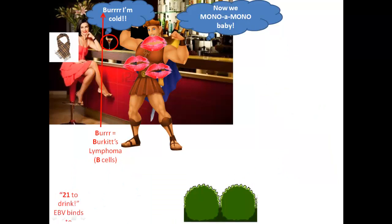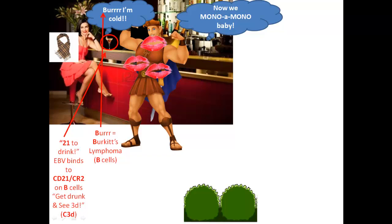Now pay attention to the drink that you see. In order to drink, at least in America, you've got to be 21 years old — think about America, not Canada, because that's 19. So 21 to drink reminds you that the B cell receptor is CD21, also known as CR2, complement receptor number two. Now that's going to bind to C3D. To remember C3D, remember when you get drunk you can take this two-dimensional picture and see it in 3D. So C3D is the complement marker on the Epstein-Barr virus that will bind to CD21 and CR2, the same receptor on the B cell.